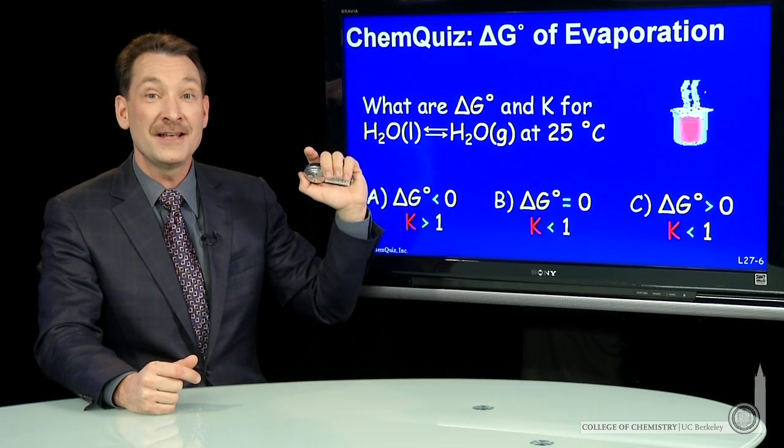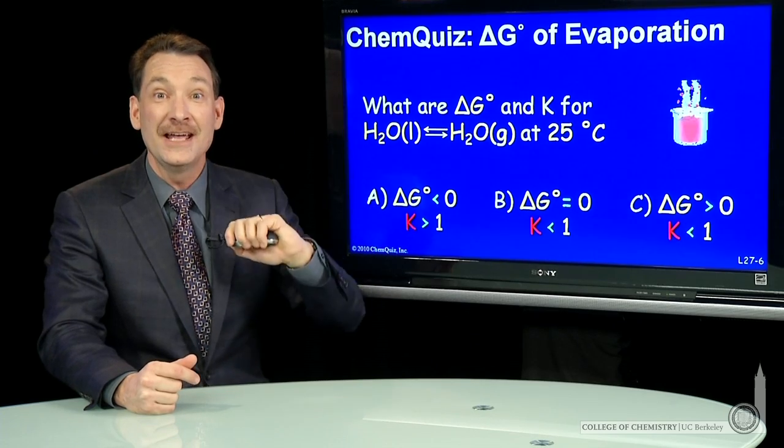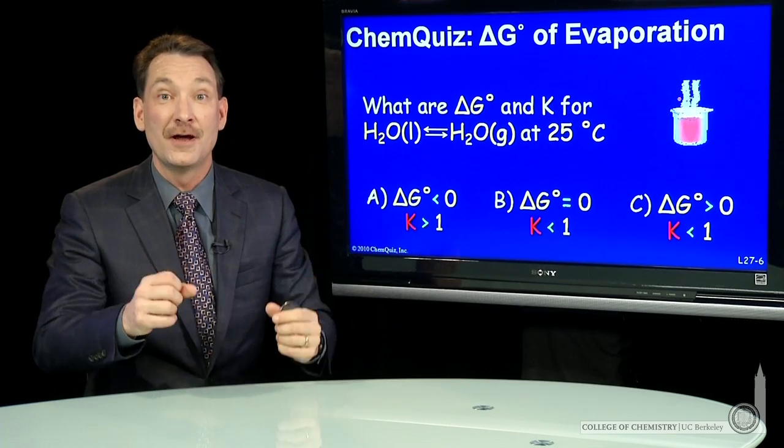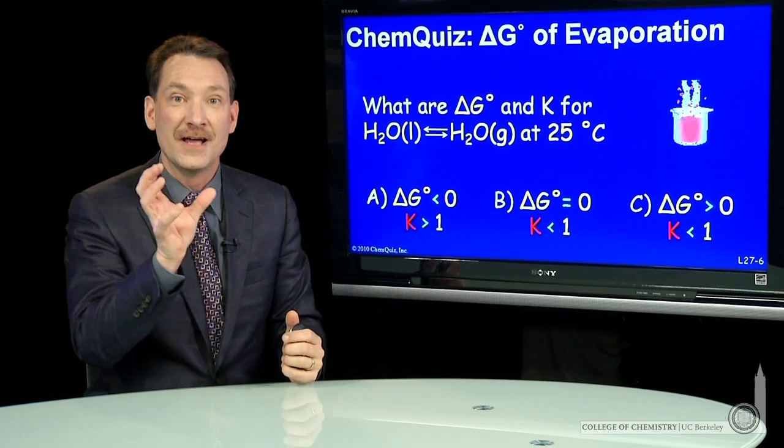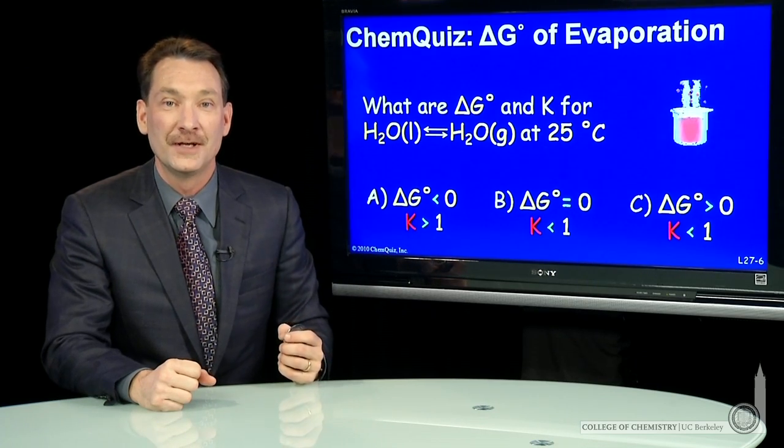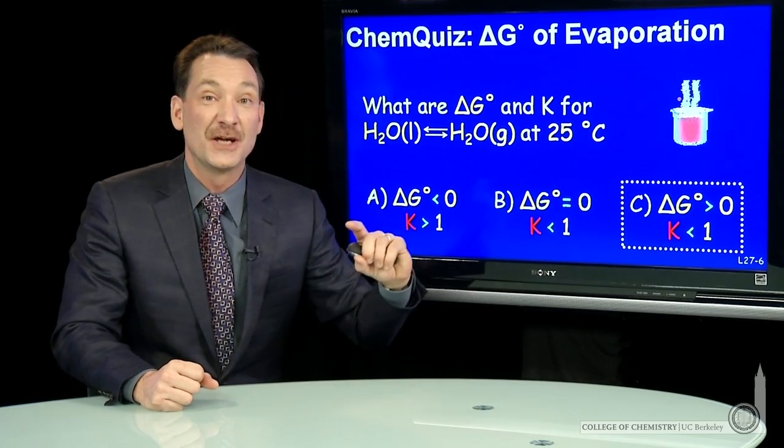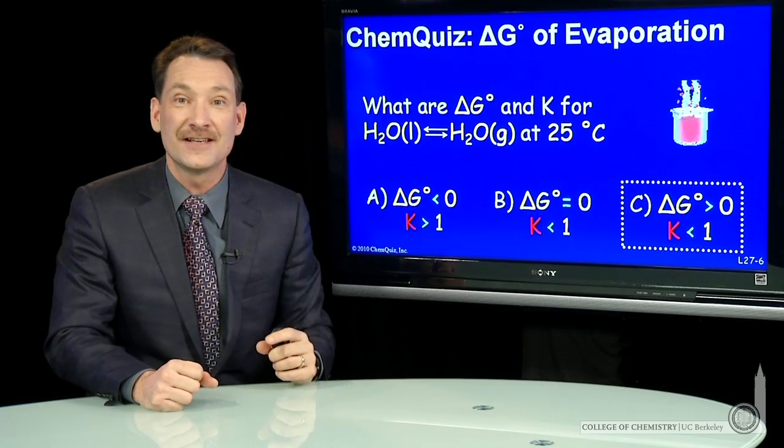ΔG positive in the standard state means K has to be less than 1. Those two things go together by our definition of ΔG° = -RT ln K. So I can make the correlation that ΔG° is bigger than 0 and K is less than 1.